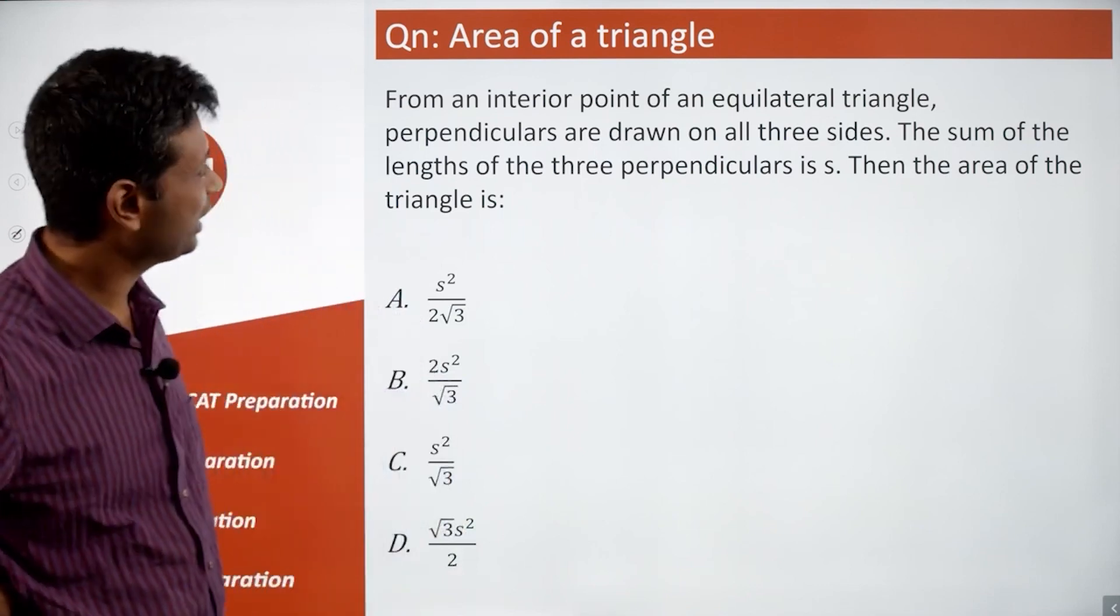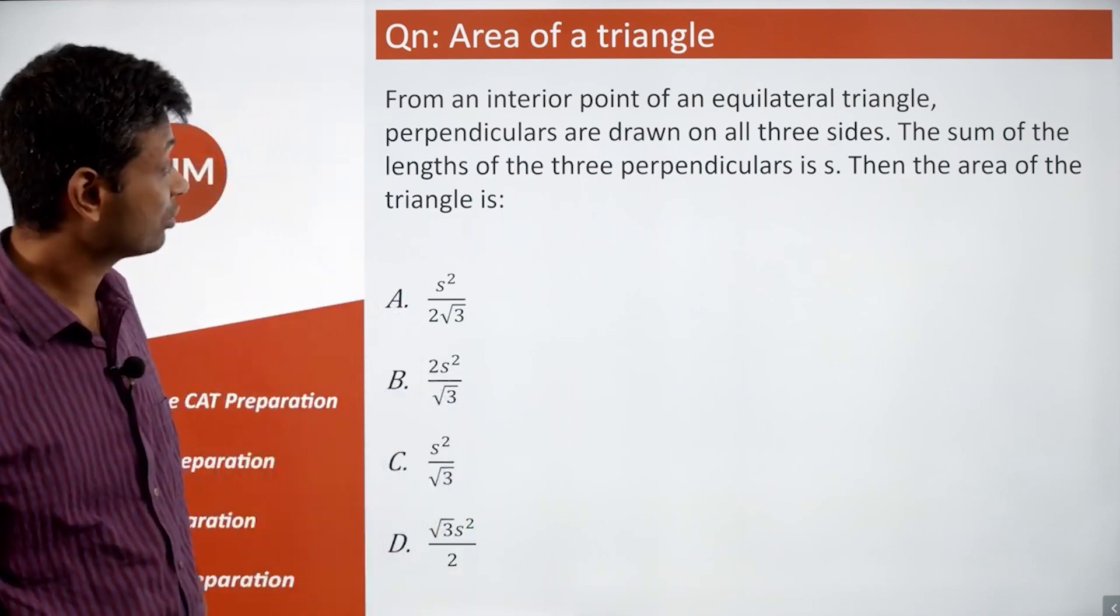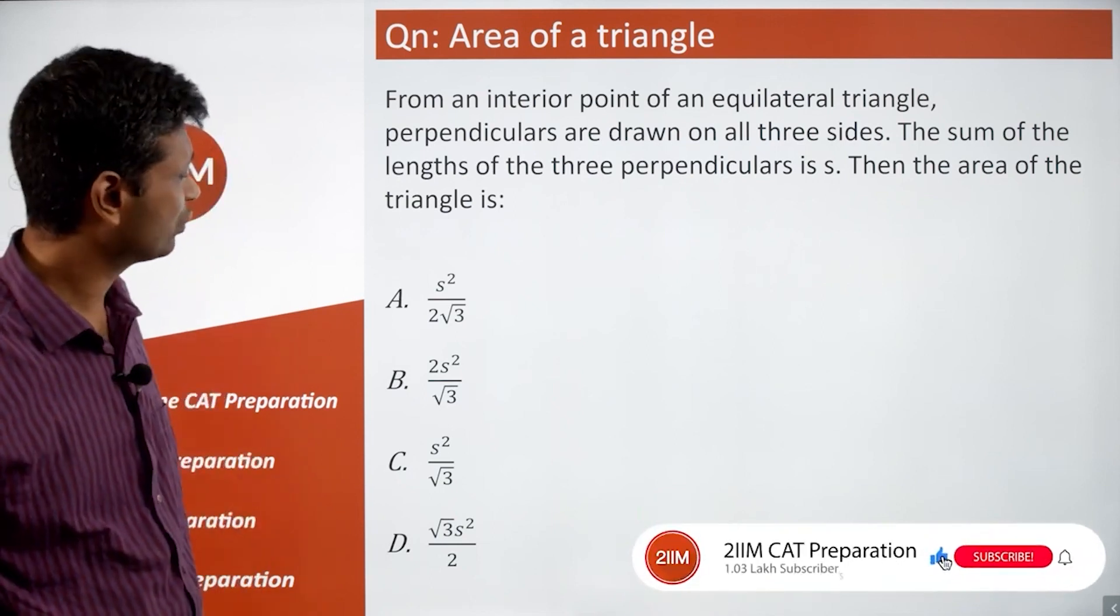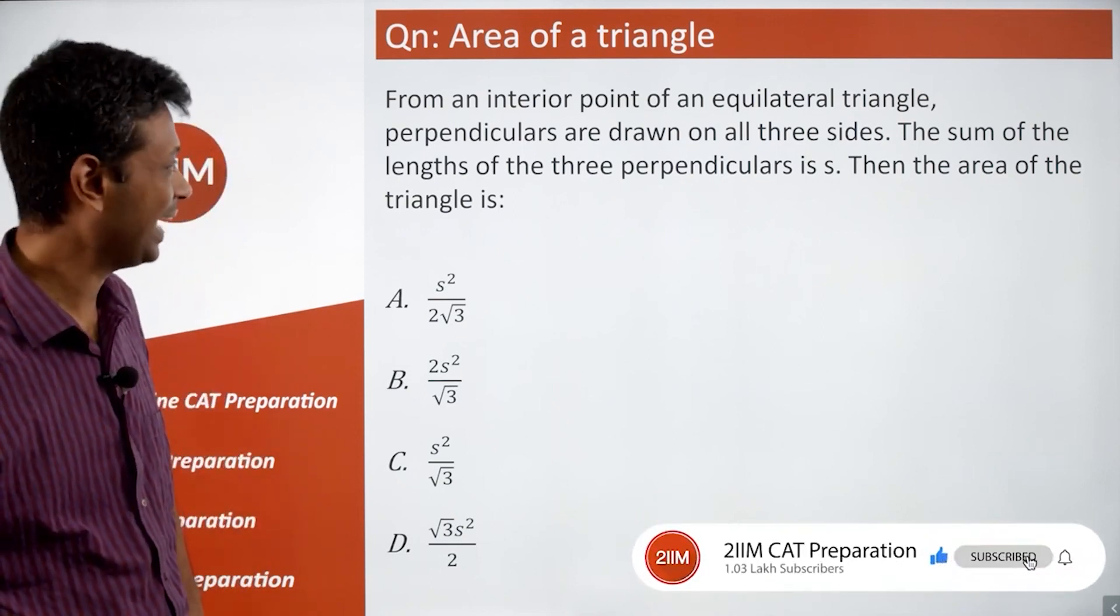Again, wonderful question. From an interior point of an equilateral triangle, perpendiculars are drawn on all three sides. The sum of the lengths of the three perpendiculars is s and the area of the triangle is asked.